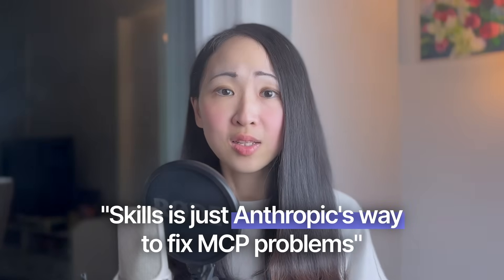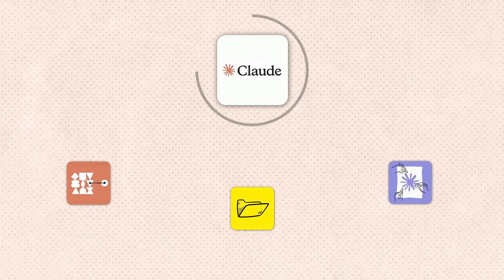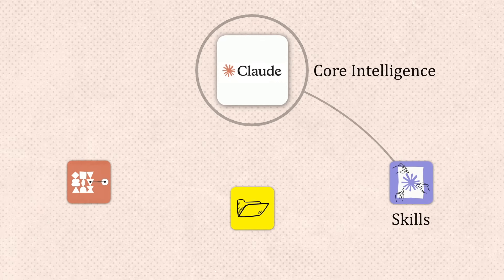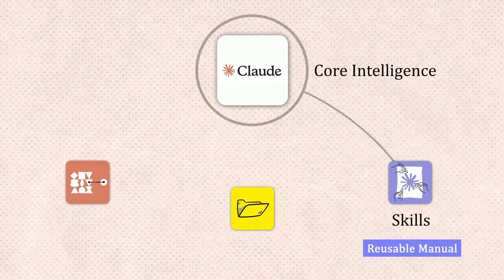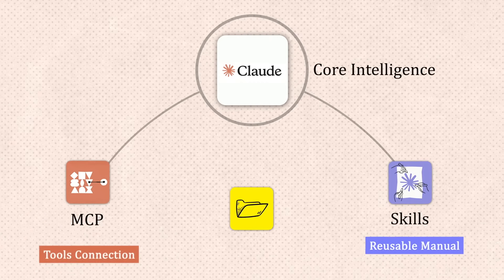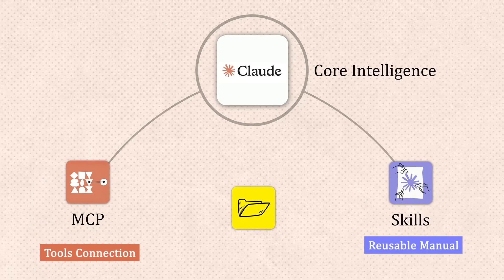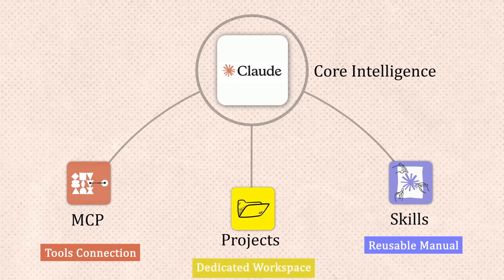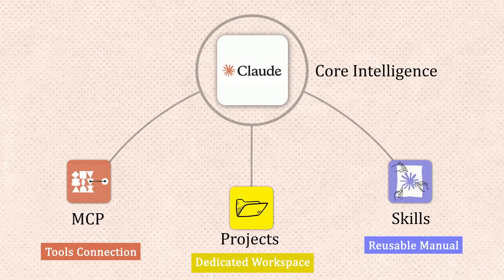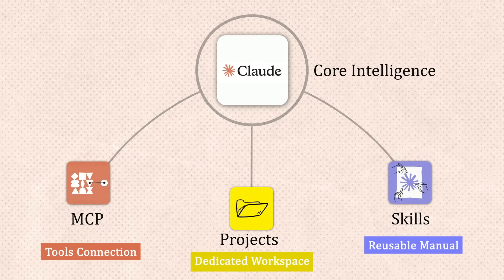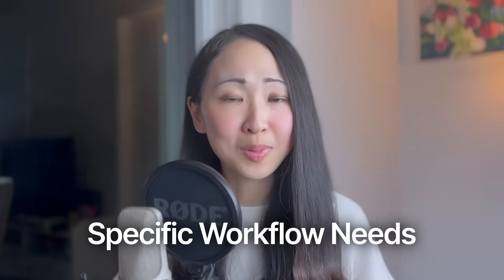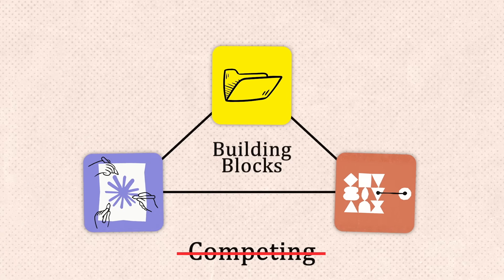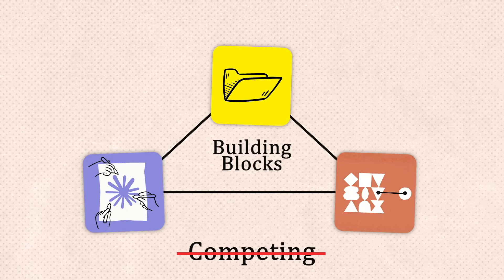Another big confusion is between Skills, MCP, and Projects. Some might say Skills is just Anthropic's way to fix MCP problems — this is a big misconception. Under the lens of Claude's ecosystem: Claude itself is the brain, the core intelligence that makes decisions. Skills are the instruction menus — reusable instructions for how specific tasks should be done. MCP provides the tools, the actual capabilities to do things outside of Claude's knowledge, like creating a file or calling a database. Projects are the dedicated workspaces where you can combine Skills, MCP tools, and background knowledge for specific ongoing work. They are not competing — they are building blocks designed to coexist to build powerful workflows or agents.